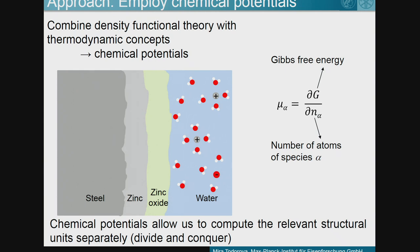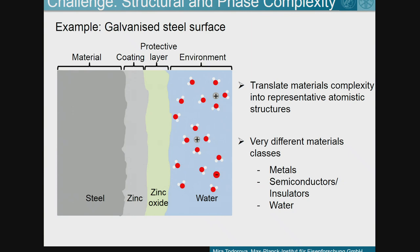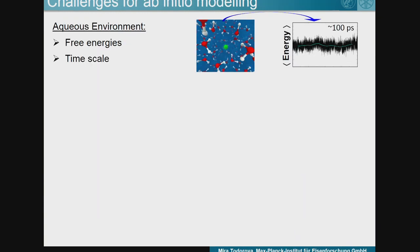We have worked on different parts of this interface, and today I would like to talk about the interface between water and the electrode. We have very different classes of materials — metals, semiconductors or insulators, and water — which impose different challenges to DFT calculations. When thinking about an aqueous environment, we can't just do a T equals zero ground state calculation. We have to use molecular dynamics because we need free energies, and 100 picoseconds is a long trajectory for us. We also need to include van der Waals interactions.